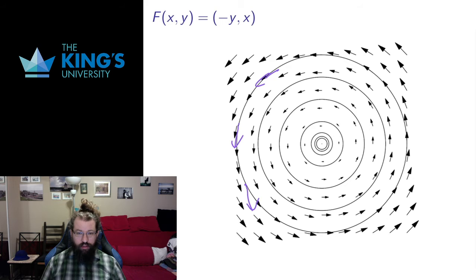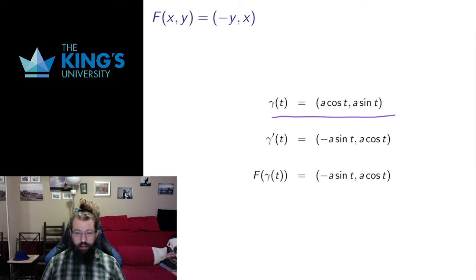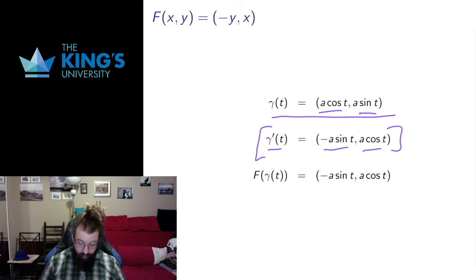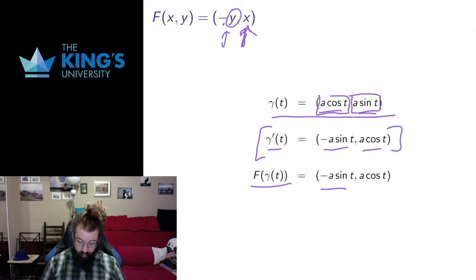We can fairly easily see that these curves fit these directions. What's going on algebraically? The parametric curve that describes a counterclockwise circle is γ(t) = (a cos t, a sin t), where a is the radius, and these all take exactly the same amount of time to go around, t from 0 to 2π. Taking the derivative: the derivative of cos is negative sine, the derivative of sine is cos, so those are the tangents to the parametric curve. Now I evaluate the vector field on the parametric curve: the vector field is (-y, x), so I take the y component of the parametric curve multiplied by negative 1, and take the x component.